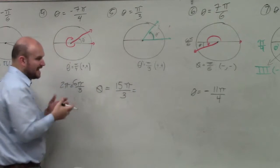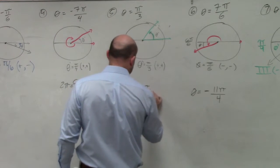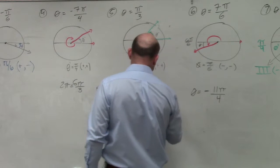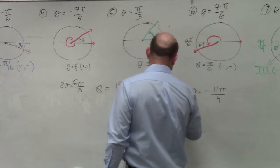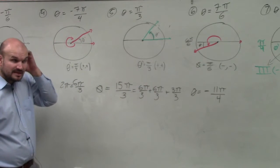Well, again, guys, remember, adding fractions, you're just adding the numerator. So it's 6 pi over 3 plus 6 pi over 3 plus 3 pi over 3, which is really just pi, right?